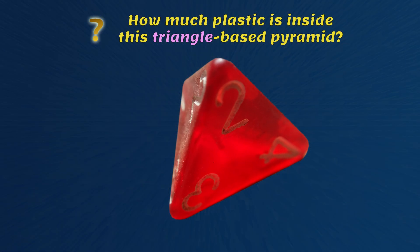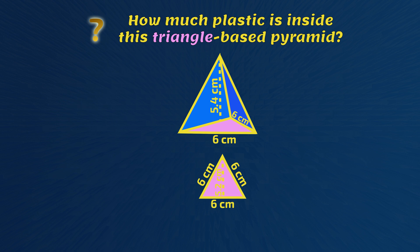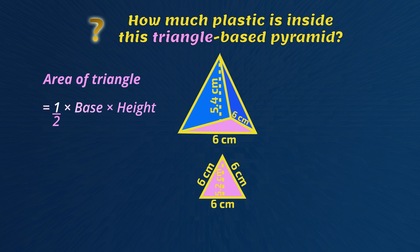Now for the second example. How much plastic is inside this triangle-based pyramid die? This pyramid has a triangle as its base, so let's look at this triangle. The sides of the triangle are each 6 centimeters. The height in the triangle is 5.2 centimeters. Now for the area of the triangle: that's one-half multiplied by the base of the triangle multiplied by the height of the triangle. So one-half times 6 times 5.2 is 15.6 square centimeters.